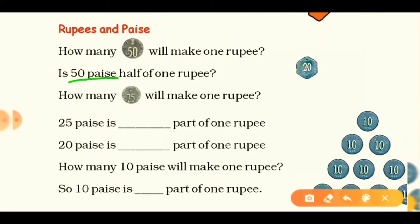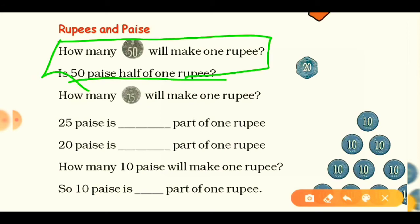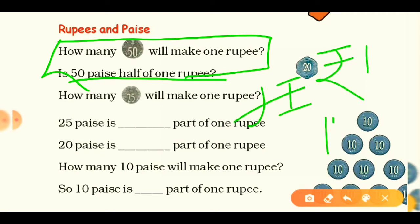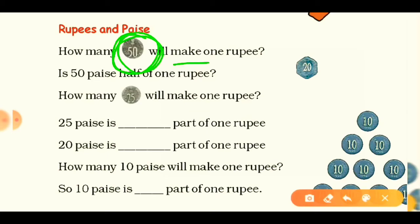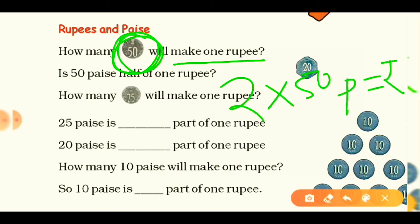Now let's look at a question related to Rupees and Paise. You have to know that one rupee makes 100 paise. The question is: how many 50 paise coins will make one rupee? Since 50 paise plus 50 paise gives 100 paise, and 100 paise makes one rupee, two coins of 50 paise make one rupee.